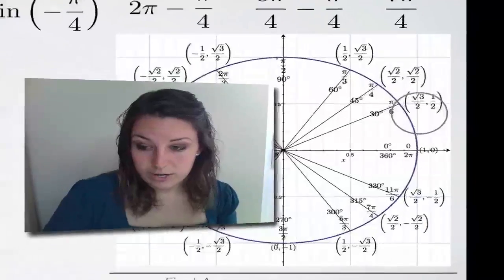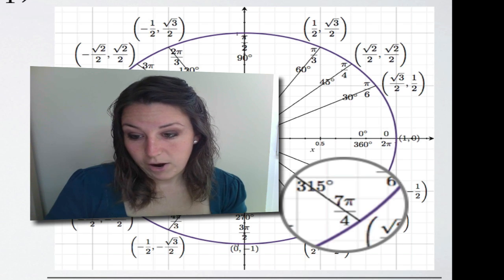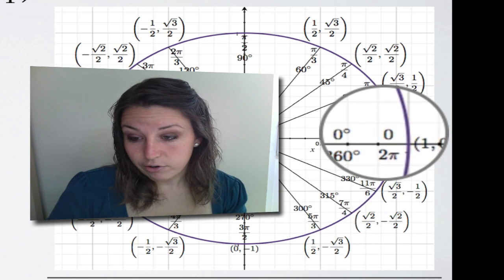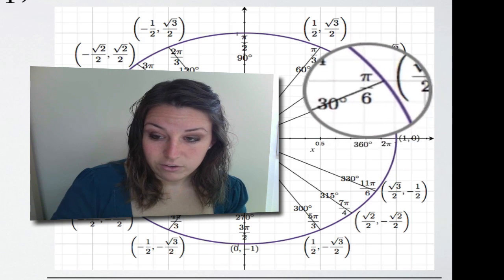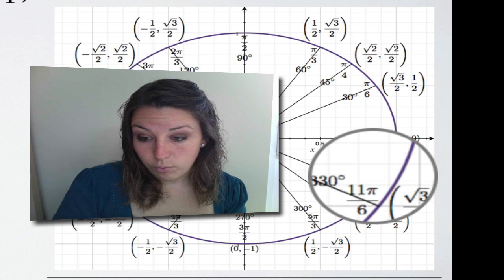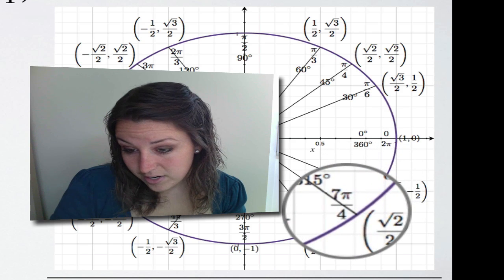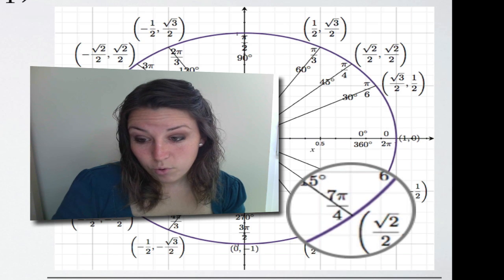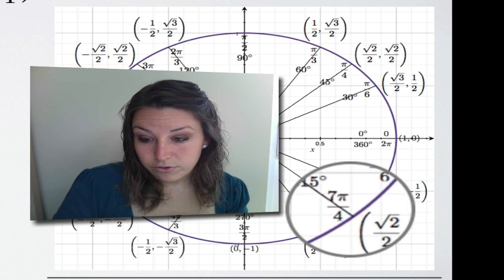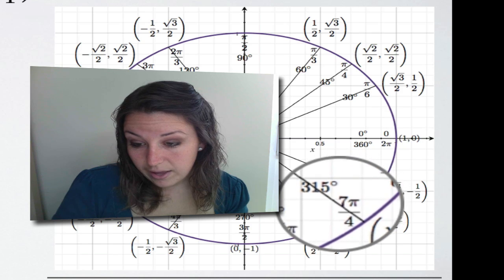Let's jump over to the unit circle. Here is the angle seven pi over four — that's where we converted negative pi over four to. If you didn't want to convert, you could start from angle zero and move clockwise, since it's a negative angle. Since our denominator is four, you look for the first angle with a denominator of four going clockwise, which lands you right here at seven pi over four.